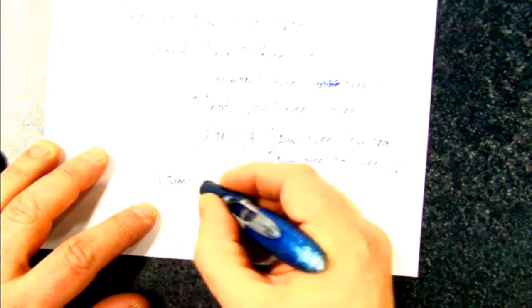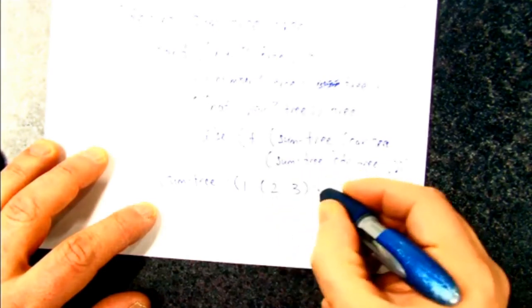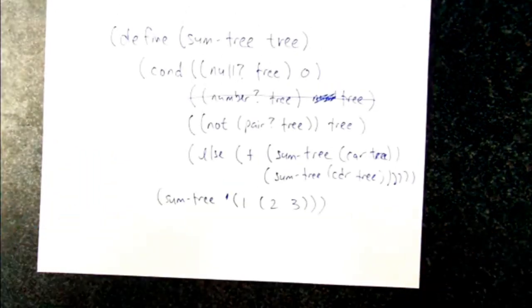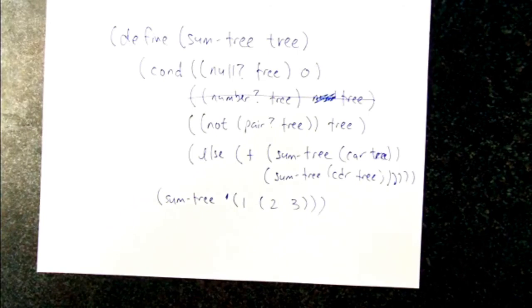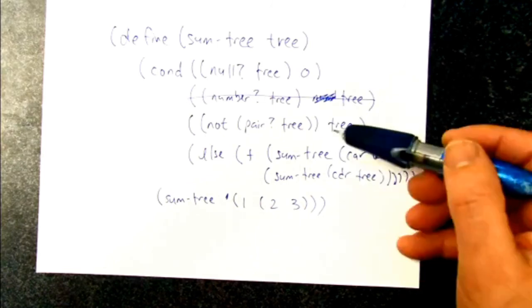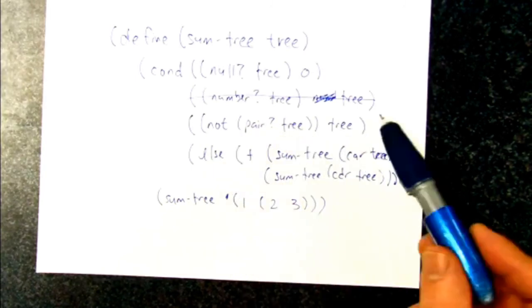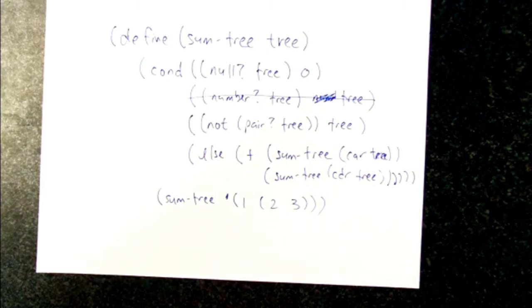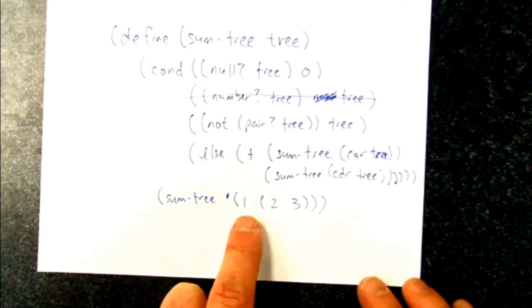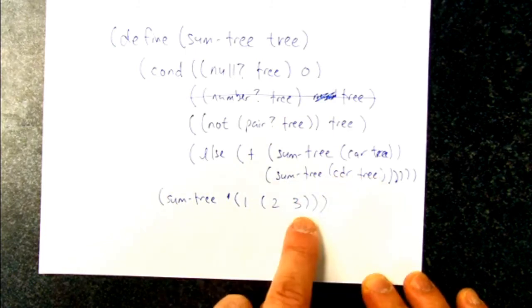Let's say we were going to do sum tree on the list (1 2 3). So when we first go in and call ourselves, tree is that whole list. So it's not null, it's not a pair. I mean, it's not not a pair. It is a pair. Pair tree says true, so not of that is false. So it's not a number, it's a pair. So we hit the else case. So we're going to recurse. We're going to add the result of calling sum tree on just the number one. And then we're going to... that's the car. And then we're going to recurse on this list as the cutter.